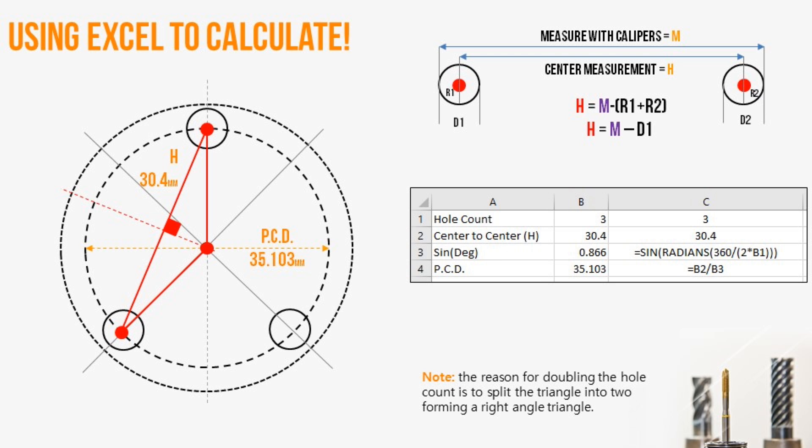The other nice thing about this, it really gives you some pretty good tolerances, because you can take this out to four, five, six decimal places, so you can get very precise. Most of the PCD calculations you see will be for brake rotors, tires, or rims I should say, that have rather large tolerances.